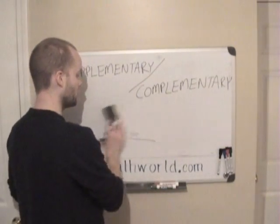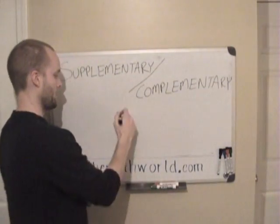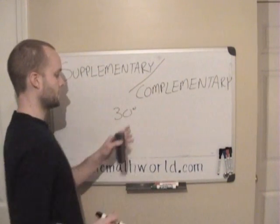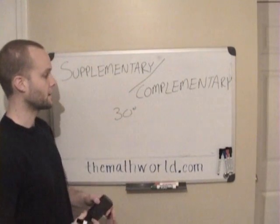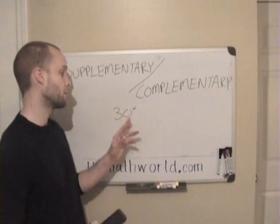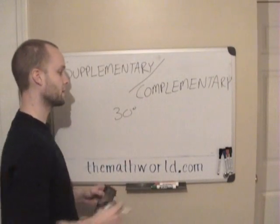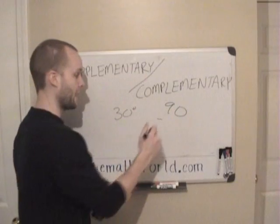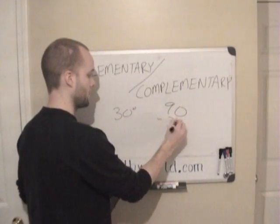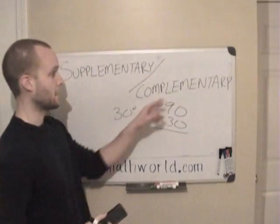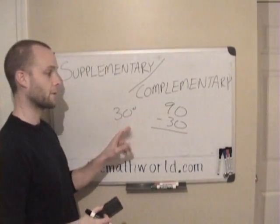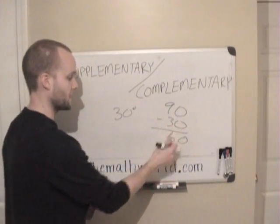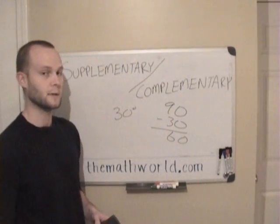Let's do one more. Let's say they give us 30 degrees and say find the complementary angle for 30 degrees. All we have to do is take 90 and subtract the angle we have. So the complementary angle for 30 is 60 degrees.